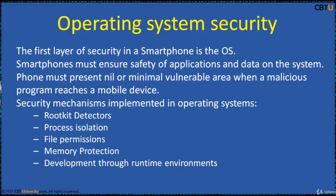The first layer of security in a smartphone is the operating system. Smartphones must ensure safety of applications and data on the system. Phones must present nil or minimum vulnerable area when a malicious program reaches a mobile device. Security mechanisms implemented in the operating system are rootkit detectors, process isolation, file permissions, memory protection, and development through runtime environments.